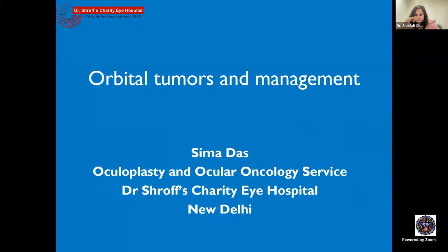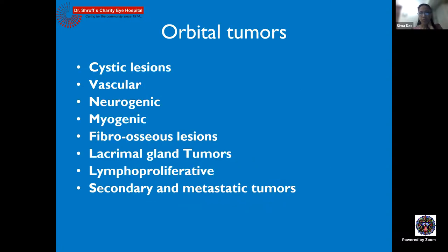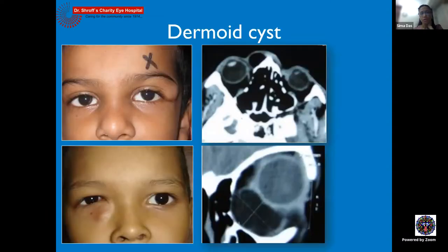The session will go through cases of orbital tumors, covering cardinal signs and management outlines. The orbit has many different anatomical structures from which tumors can arise. Broadly, cystic lesions are the most common type, followed by vascular, neurogenic, myogenic, fibro-osseous, lacrimal gland tumors, lymphoproliferative lesions which are among the commonest in adults, and secondary or metastatic tumors from other parts of the body.